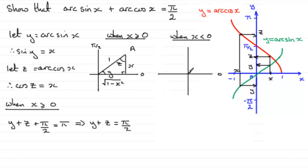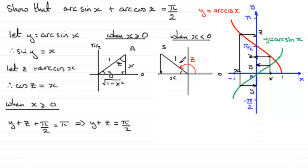So if I draw a triangle in the second quadrant, with the right angle at pi upon 2 radians, I can mark in z as our obtuse angle. When we look at the cosine of z, we know that in this quadrant only sine is positive — cosine is negative. Cosine of z is x, or x over 1. Adjacent over hypotenuse means this side is x and the hypotenuse is 1. Working out the third side by Pythagoras' theorem gives the square root of 1 minus x squared. So cosine z equals x and we've filled in the sides.